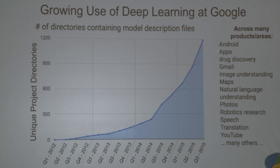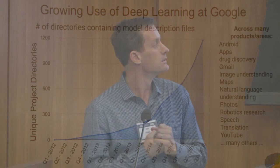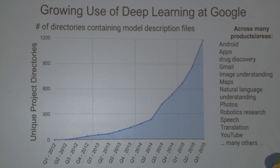To characterize how much deep learning has taken over within Google: this is the number of different source code directories in our large shared source repository that contain model description files for our neural net training system. You see almost exponential growth of model training files across many different areas — Gmail, ads, search, image understanding, research, OCR, and more. People have discovered that these tools are really applicable to a pretty broad range of problems.